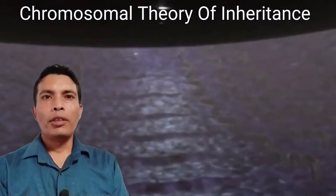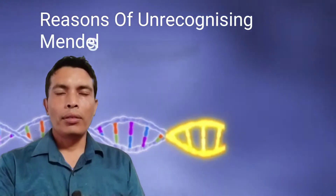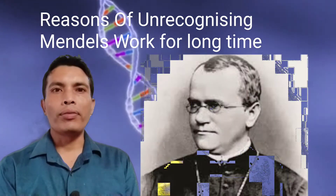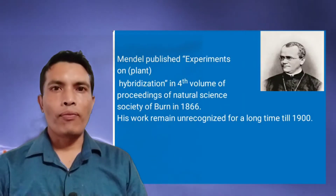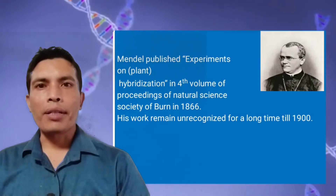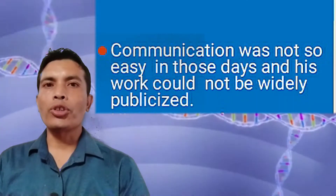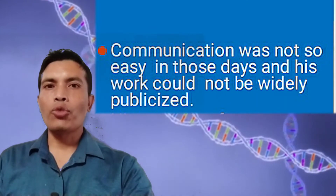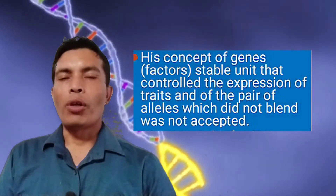Now we move to chromosomal theory of inheritance. Before we learn what it tells us, let us find out the reasons Mendel's laws of inheritance went unrecognized for a long period of time. Mendel published his experiments on plant hybridization in the fourth volume of Proceedings of Natural Science Society of Brno in 1866. His work remained unrecognized till 1900. The first reason was that communication was not so easy in those days and his work could not be widely published.